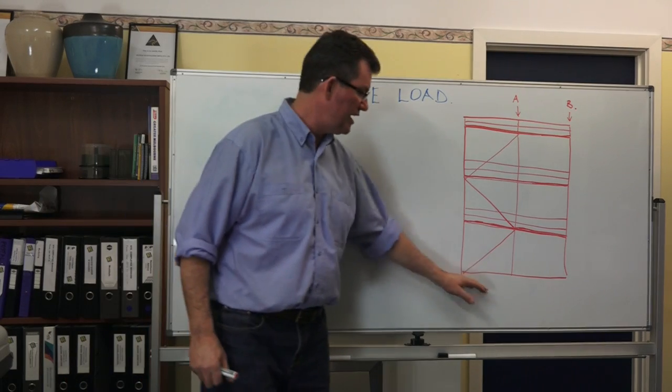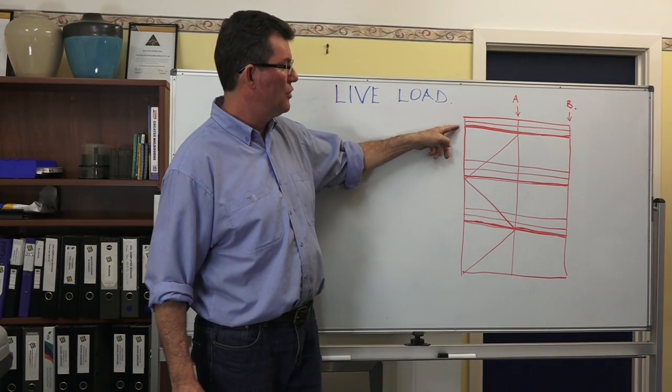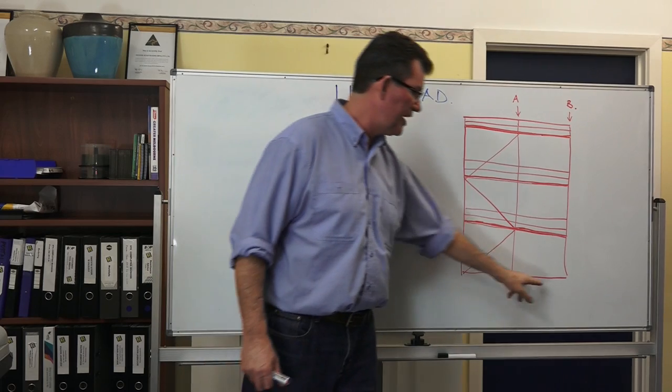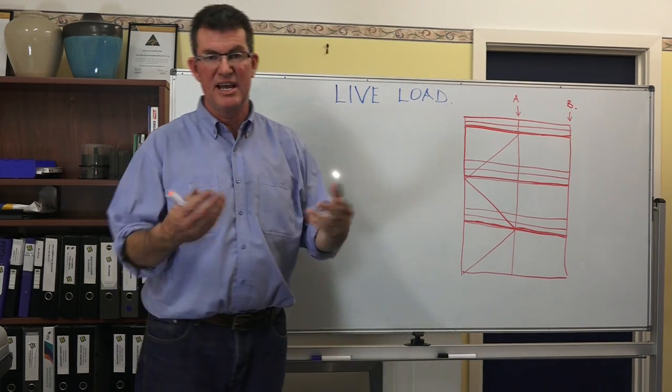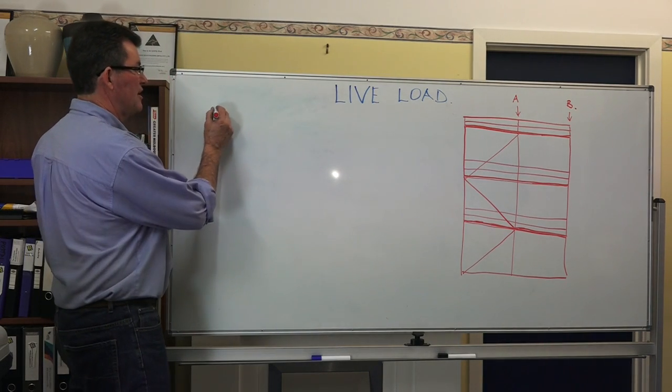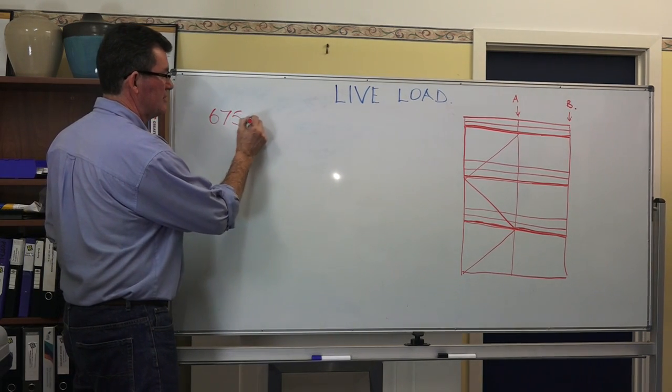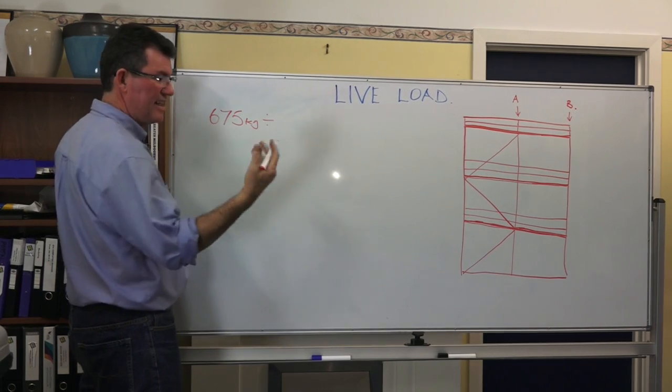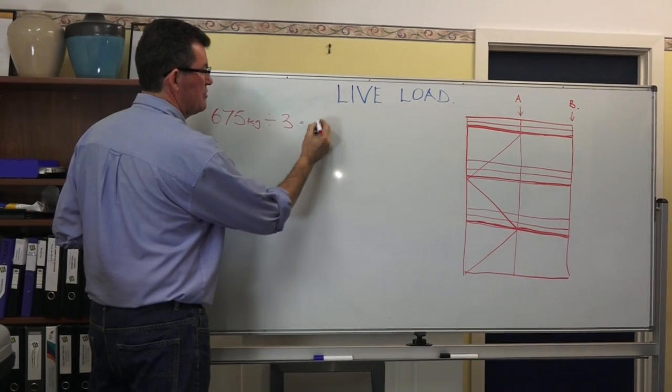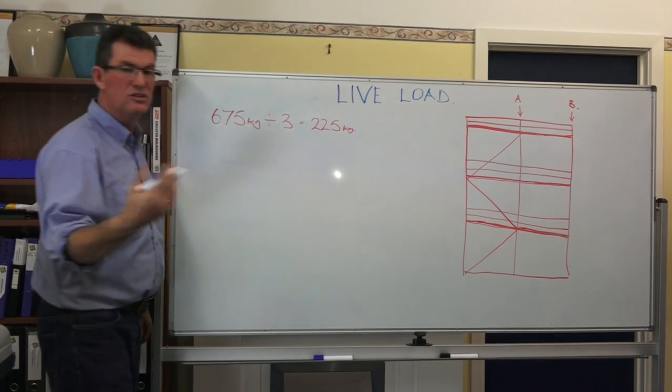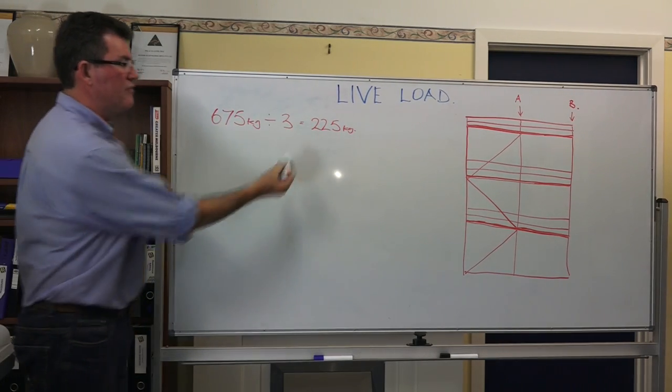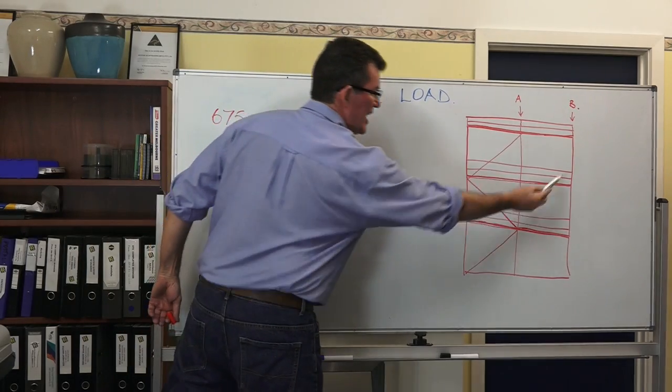So we've got a scaffold here and it's three working levels high and it's two bays linked together. We've got standard A and we've got standard B. I'm saying that this scaffold is a heavy duty scaffold so the safe working load is 675 kilos. I divide the safe working load by three and that gives me a distribution of 225 kilos. That means off each working platform 225 kilos are being distributed down the standard.